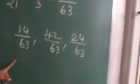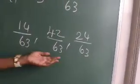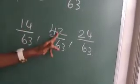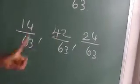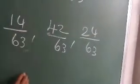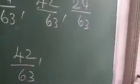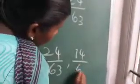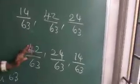Now the denominators are equalized. The new fractions are 14/63, 42/63, and 24/63. Arrange these in descending order. You only need to consider the numerators: 14, 42, and 24. Descending order means from highest to lowest. The highest is 42, so 42/63 comes first. Next is 24/63, and then 14/63.